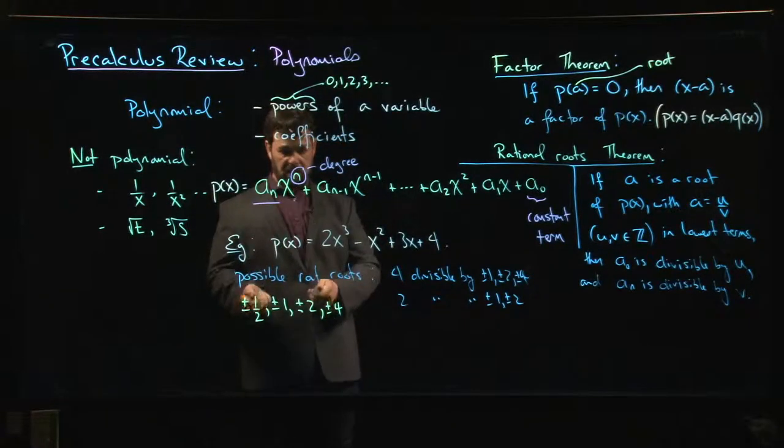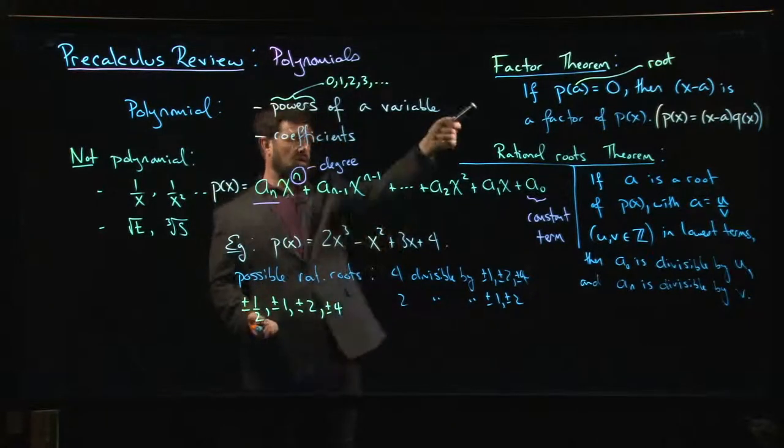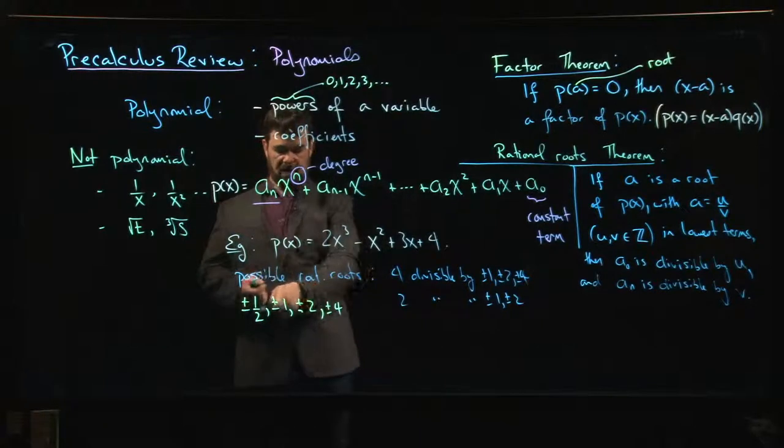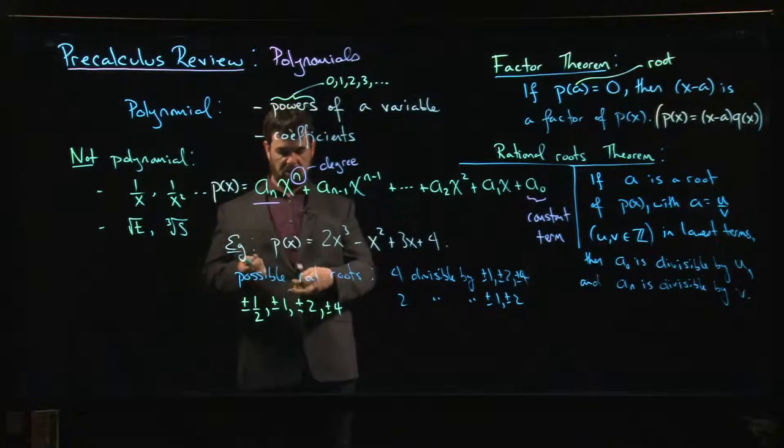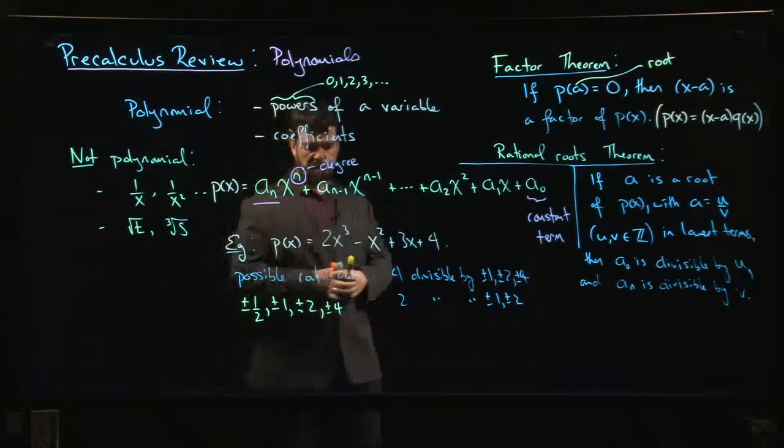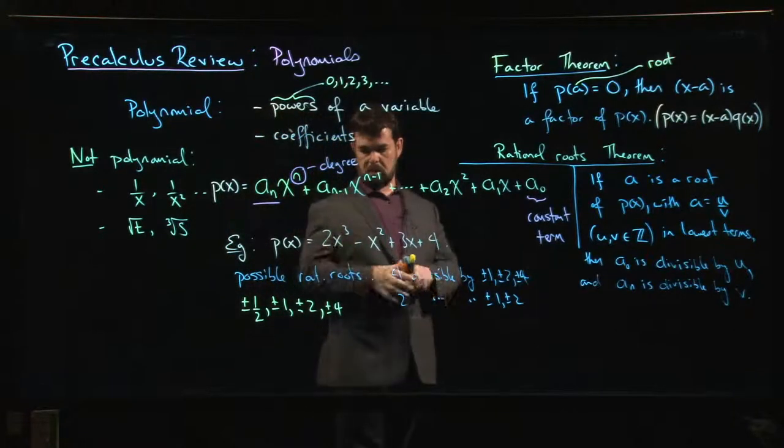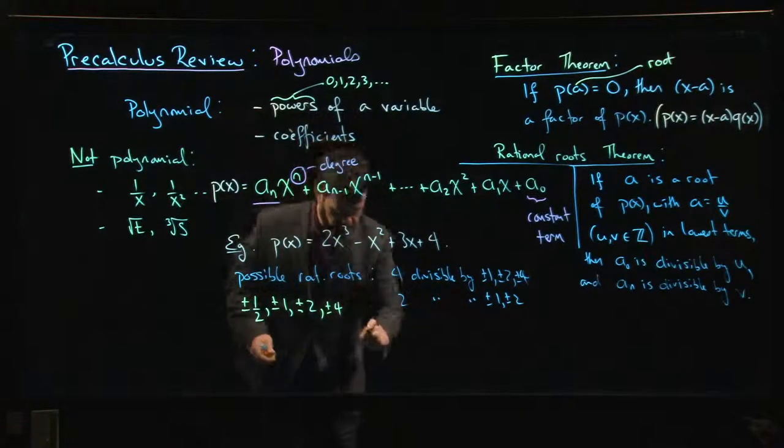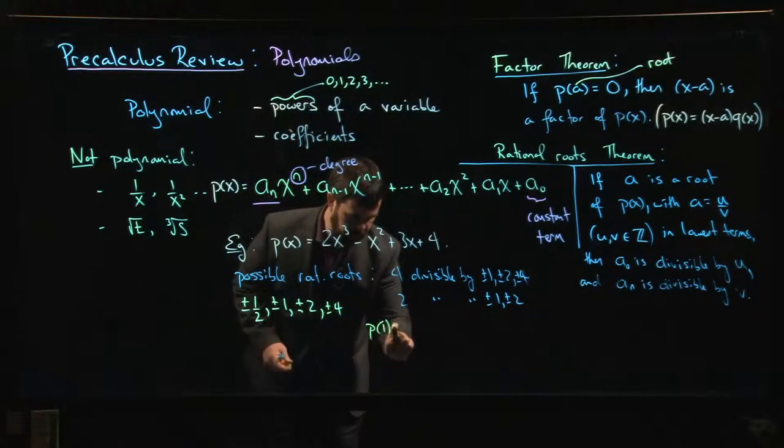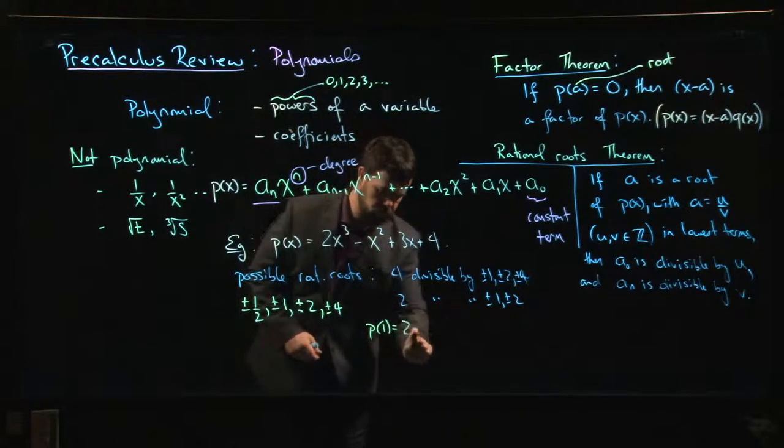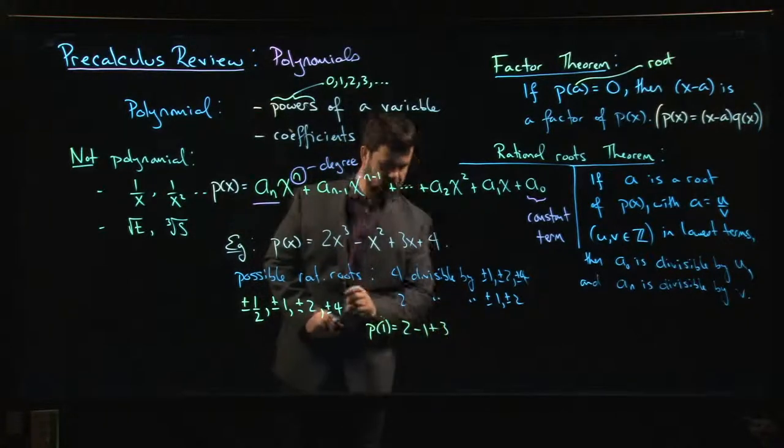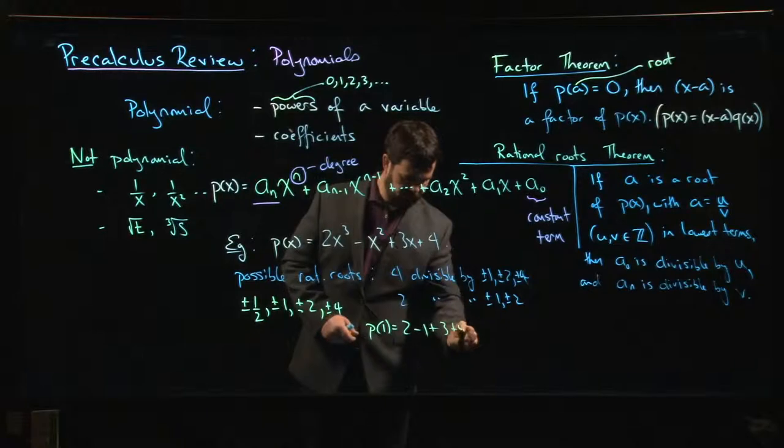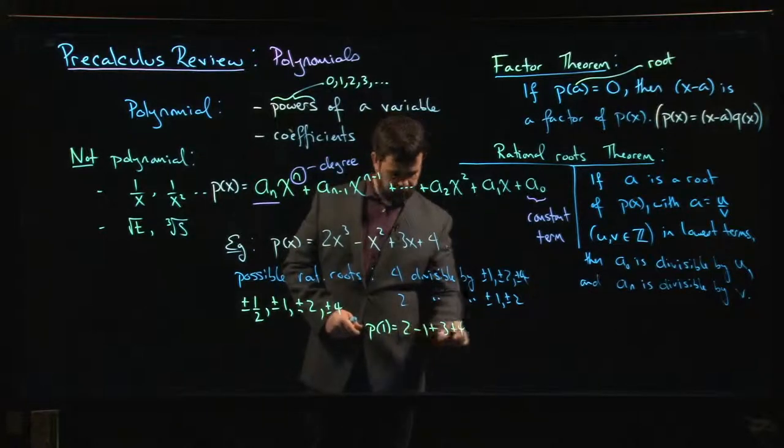So how do you figure out if any of those actually work? Well, now you come back to the Factor Theorem. You take each of those numbers, you plug them into the polynomial. For example, if I wanted to try 1, I'd come in and say, okay, so p(1) would be 2(1)^3 - 1^2 + 3(1) + 4, and I'd say okay, so that works out to 8. Definitely not zero. So 1's not going to work.